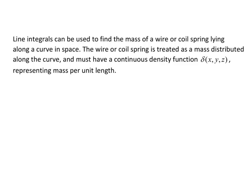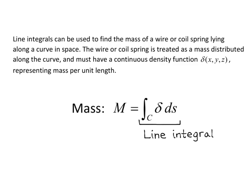If these conditions are met, then the mass is m equals the integral over curve C of delta ds. Notice that this is just a line integral like in our previous videos, and recall that ds equals the magnitude of velocity times dt. So this will give us a way to calculate the mass of a wire or coil spring.